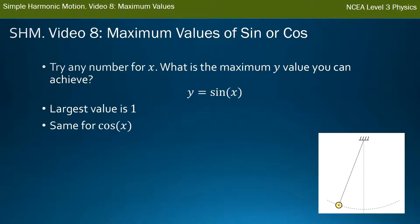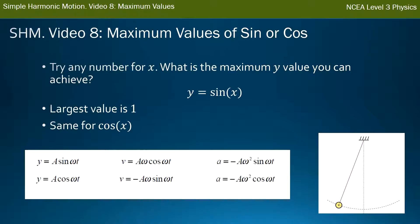Now the same is for cos. You put in any number for cos x, the largest value you can get for that is 1. Now you'll notice that all our equations for displacement in Simple Harmonic Motion, velocity in Simple Harmonic Motion, and acceleration in Simple Harmonic Motion, it doesn't matter what family, they've either got a sine omega t, or a cos omega t. And so just like with x, it doesn't matter what your omega is or your t is, the largest value you can get out for the sine or the cos is 1.